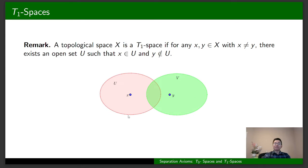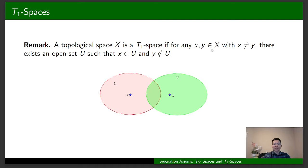Let's continue with an equivalent definition of a D1 space. Because of the equal role of x and y, we can redefine a D1 space as follows: a topological space X is a D1 space if for any two distinct elements x and y, there is an open set U such that x belongs to U and y doesn't belong to U.